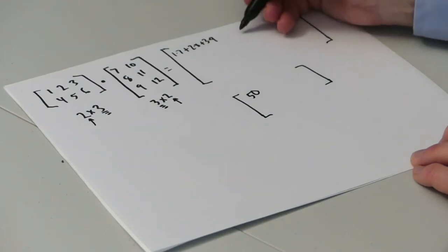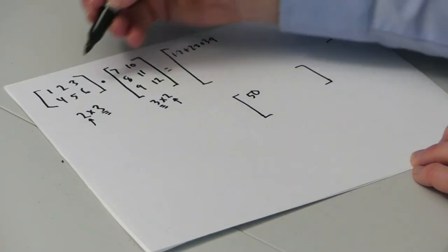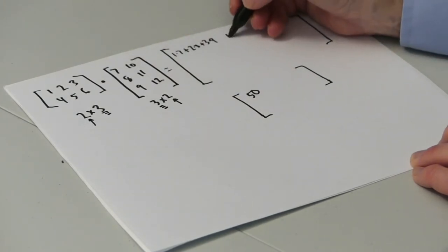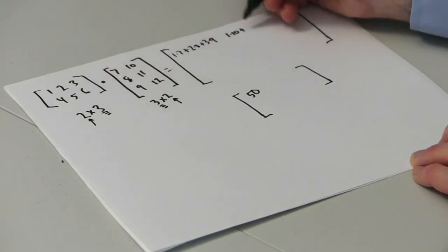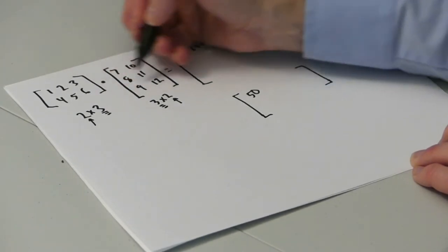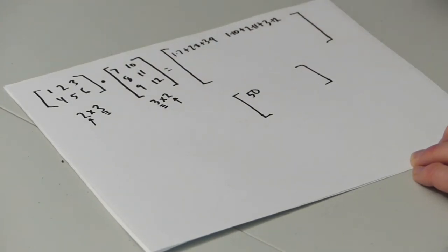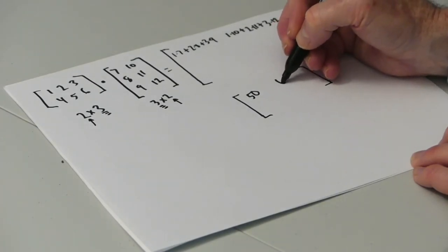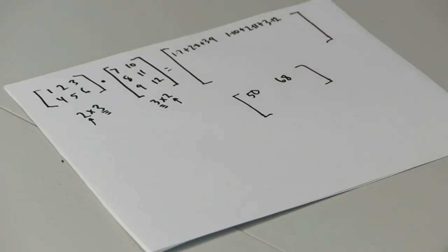Row 1 column 2 of the result is the dot product of row 1 and column 2. That's 1 times 10 plus 2 times 11 plus 3 times 12. 10 plus 22 plus 36 adds up to 68.